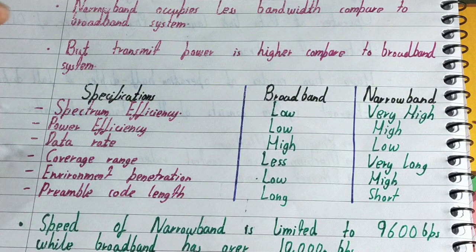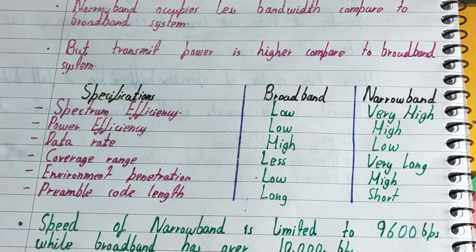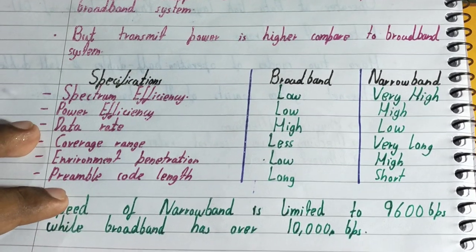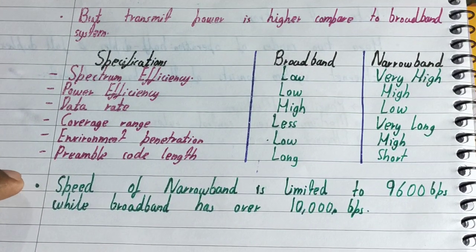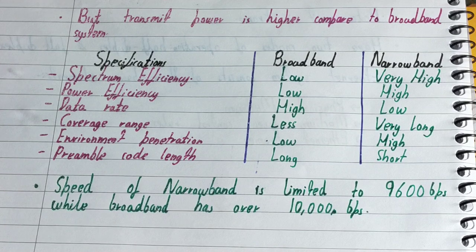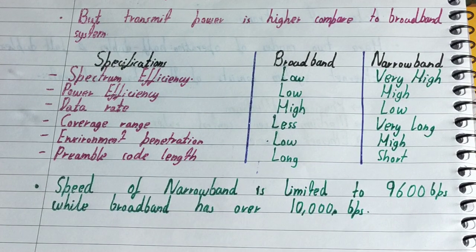The last comparison is packet or code length. Broadband is good here because it can send large amounts of data at once due to its high bandwidth. Narrowband, having low bandwidth, can only send small amounts of data or voice. The speed of narrowband is limited to 9,600 bytes per second, while broadband's starting speed is 10,000 bytes per second.